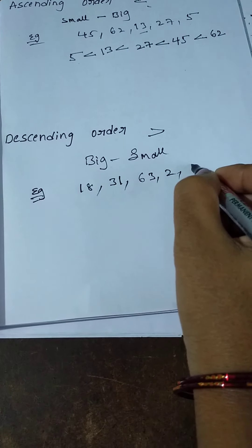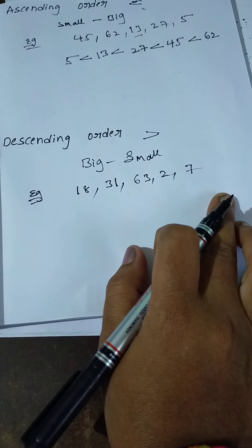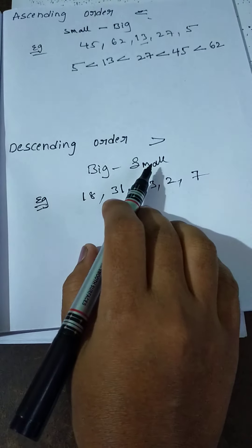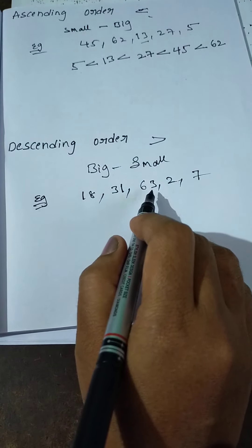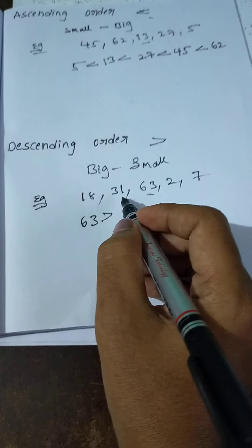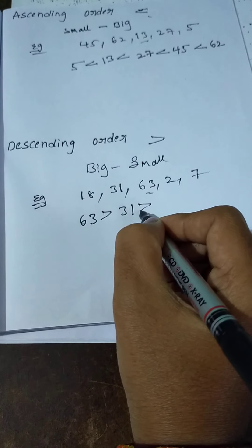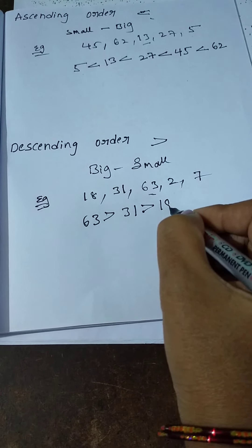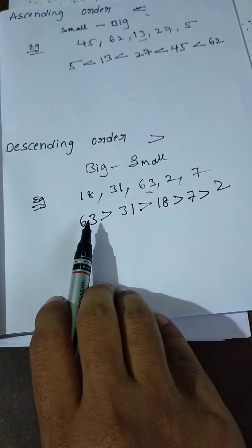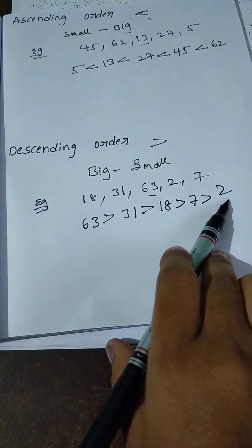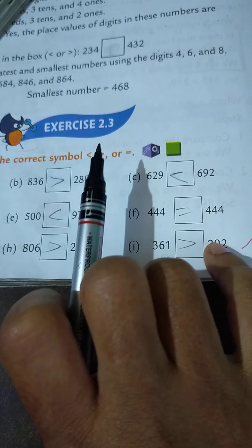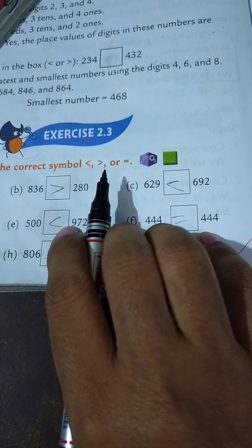For example, take the numbers 18, 31, 63, 2, and 7. Arranging into descending order — use greater than. Descending order means biggest to smallest, so first write the biggest number. Which one is the biggest? 63. So: 63 greater than 31 greater than 18 greater than 7 greater than 2. It is the order of descending order — biggest to smallest.